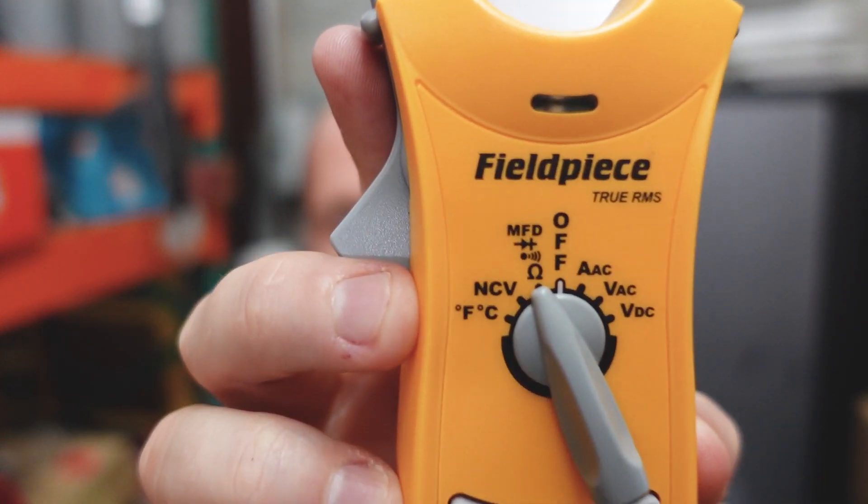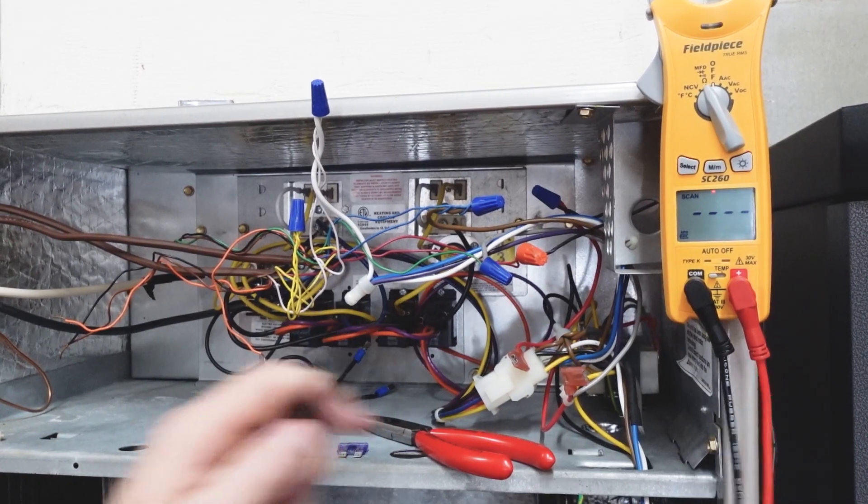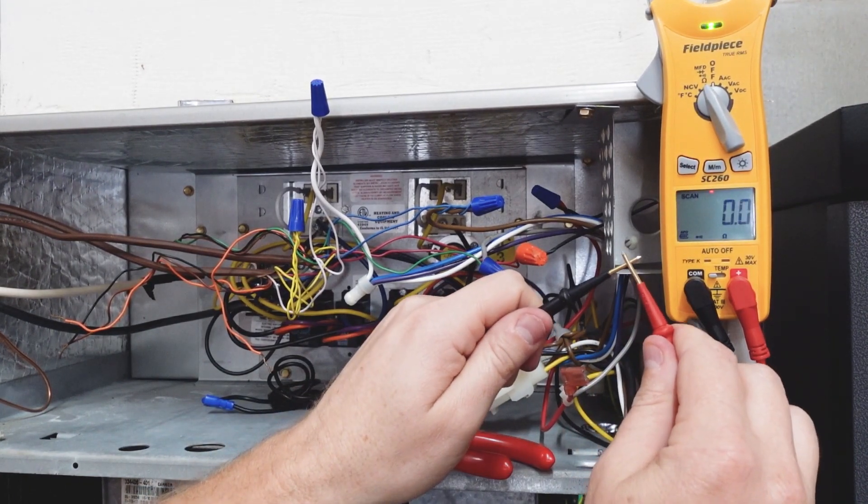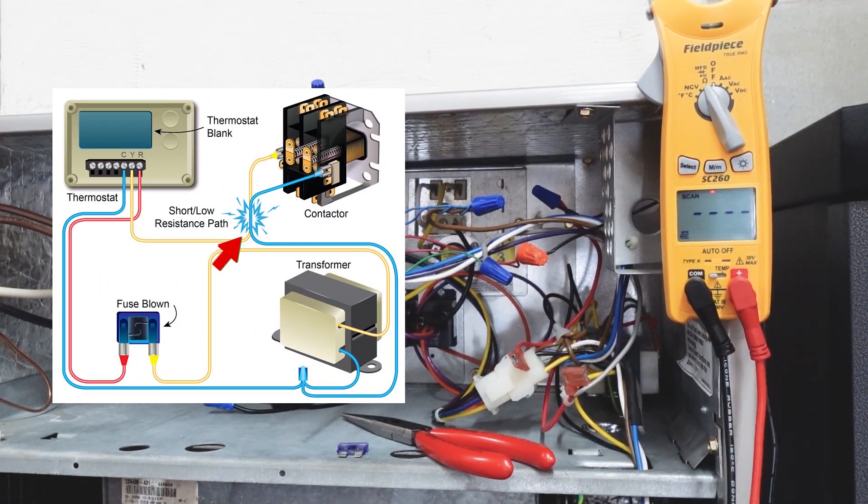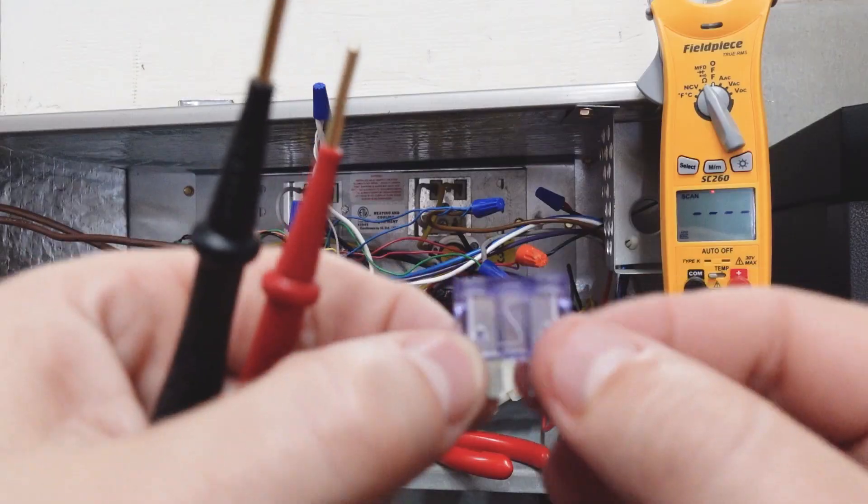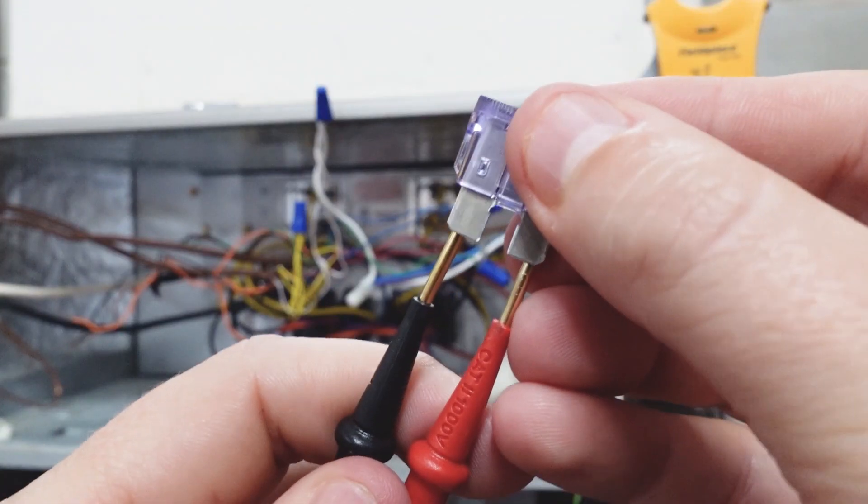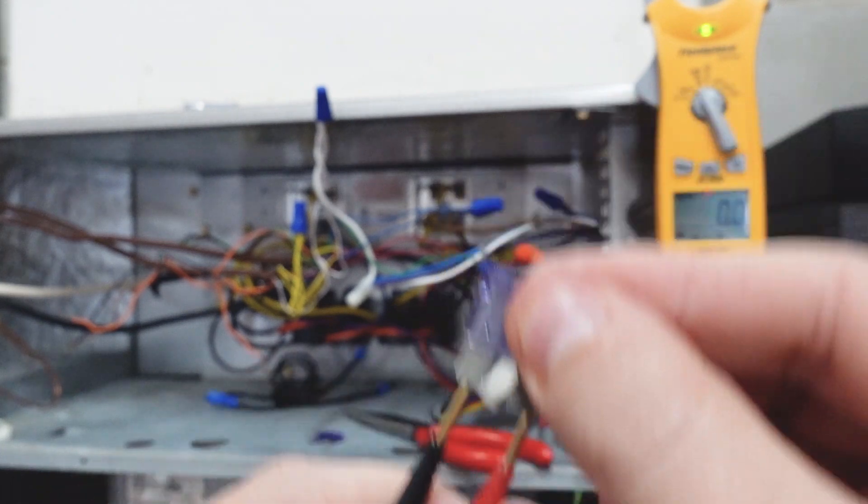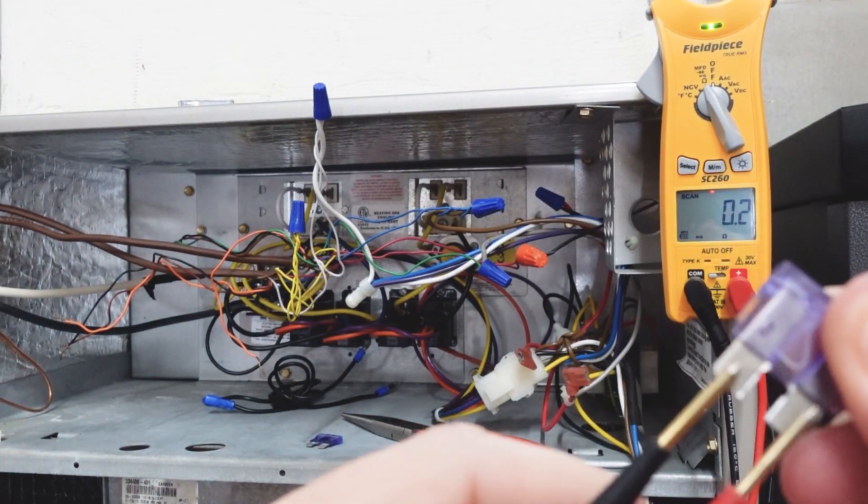These two spades are our connection points. So in order to test it, we put our meter onto the ohm scale. Specifically, we're measuring for continuity. Continuity means that there's a path, a path being a very, very low ohm or very low resistance connection with a fuse that does have a proper path and is not blown. We will ring out with continuity because we have a very low ohm path.